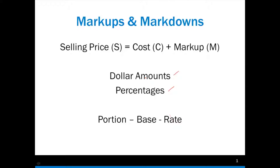Before we go any further, I want to talk about portion, base, and rate. It's a valid concept, but personally I don't like it. The reason is there are three parts — selling price, cost, and markup — and also three parts — portion, base, and rate. You'd think you could just say portion is always selling price, base is cost, and rate is markup. But that's not necessarily the case. Depending upon the situation, the portion could be selling price or cost. So if you try to do this by memorizing the portion, base, and rate, you have to memorize a lot of different situations and then recognize them in a word problem.